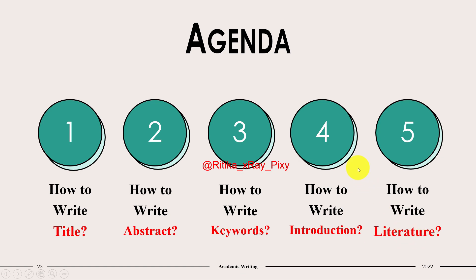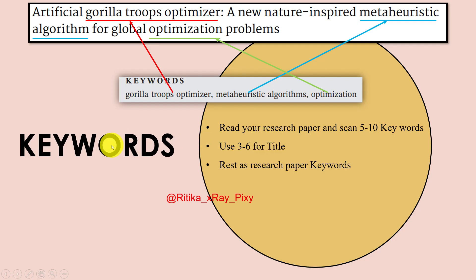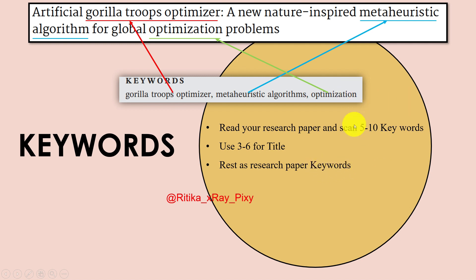To select keywords for a research paper, read your paper, scan for words, and then use three to six words from the title, with the rest as research paper keywords. For example, for a paper titled 'Artificial Gorilla Troop Optimizer,' the keywords and the title words are the same.